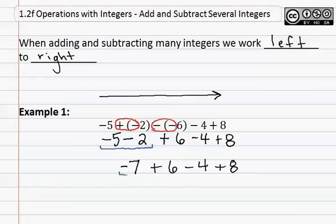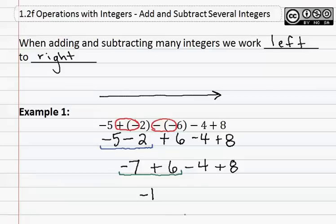In the next step, we take the first two numbers going left to right again. This time we see that it is a negative seven and a positive six. These two numbers do not have the same sign, therefore we use the rule for different signs: different signs subtract, keep the sign of the larger number. Seven minus six gives us one, and since the larger number is negative seven, our answer is negative one. We bring down all other pieces of the problem we have yet to use.